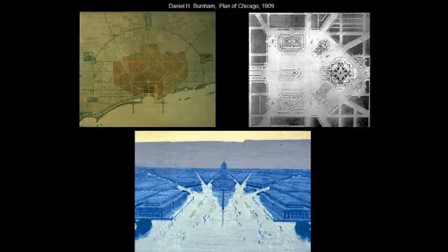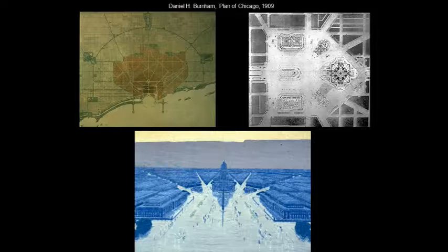Burnham himself goes on in 1909 to propose — as some of you may know — a municipal plan for Chicago, the heart of which is again a civic center. You can see the overall map of the regional scope of the plan of Chicago on the left, with at its very center a kind of triangular civic center with boulevards and avenues radiating out from it, not unlike Washington, D.C. On the bottom you see an elevation view of this dominating city hall building surrounded by classicizing buildings that in their uniformity define the central space of a public plaza.